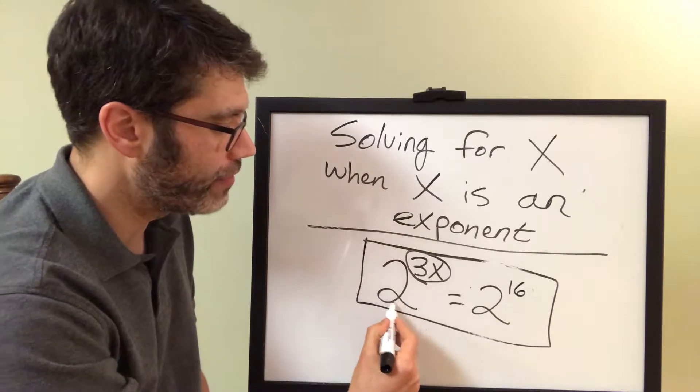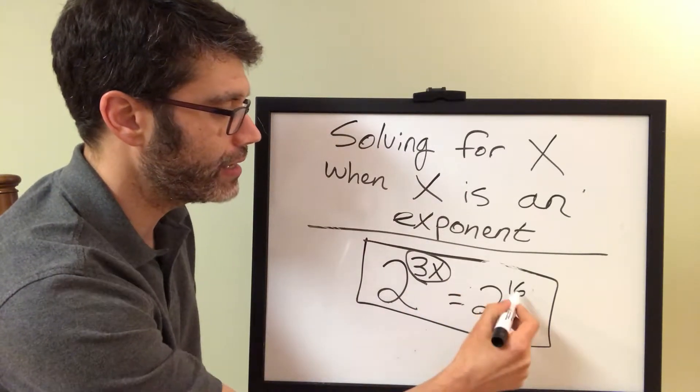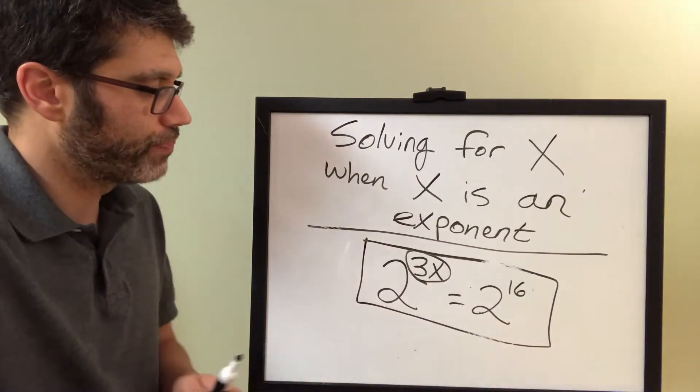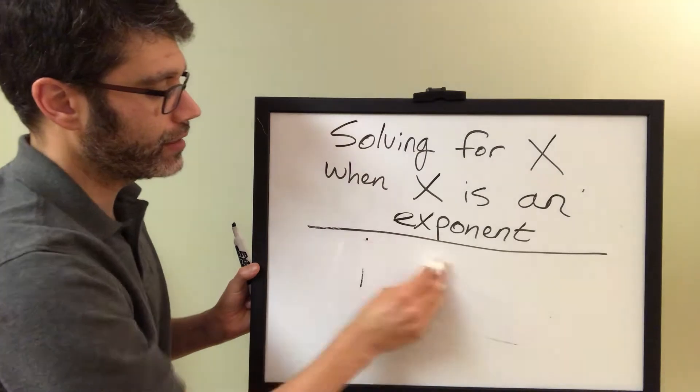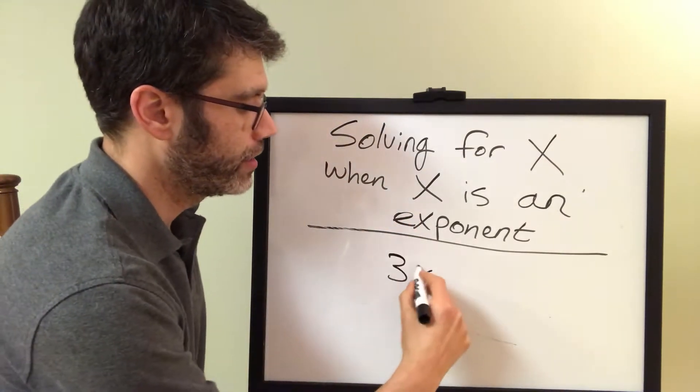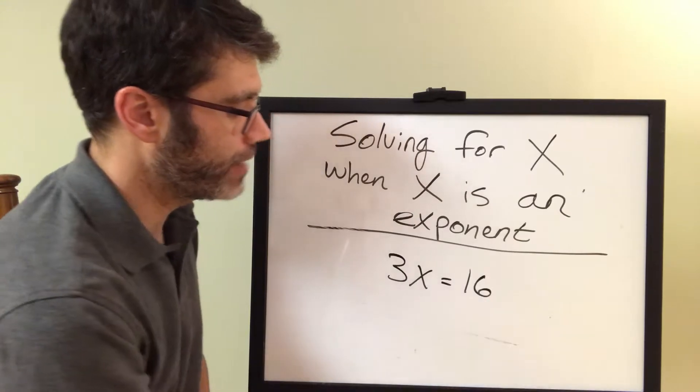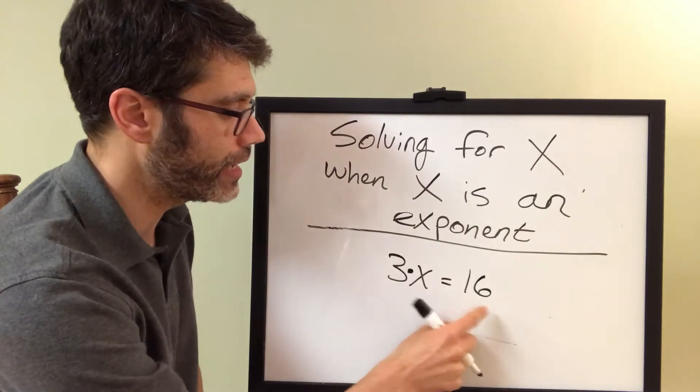Now do you see that we have like bases, and now we can set 3x equal to 16. So when I'm going to do that, I'm going to set 3x equal to 16. Now, if I just gave you this, this would be 3 times x equals 16.